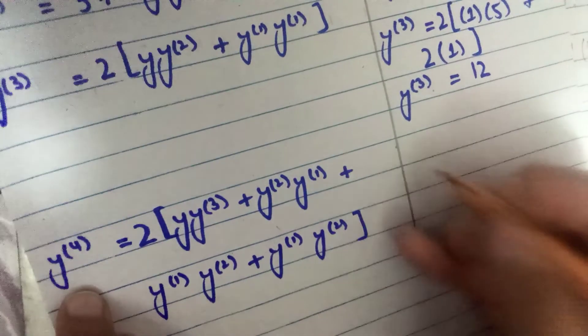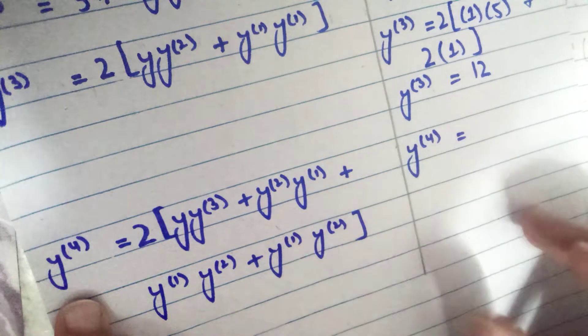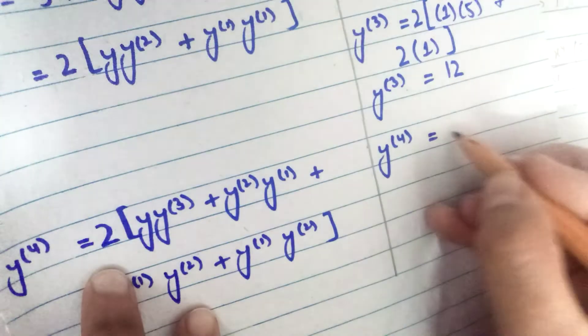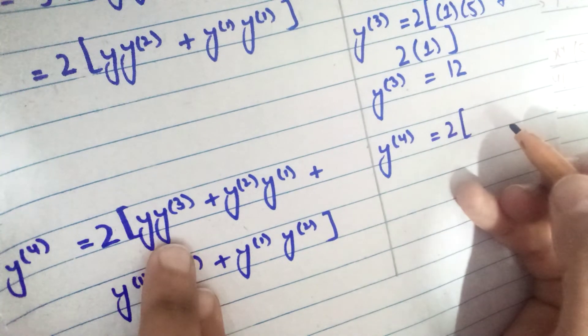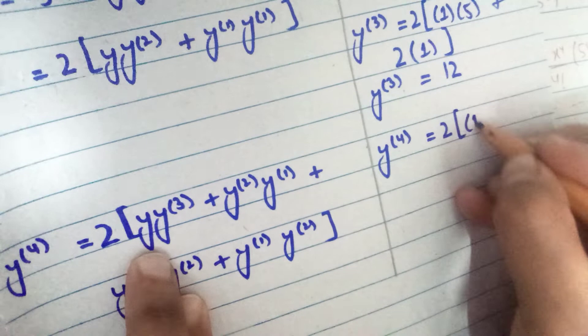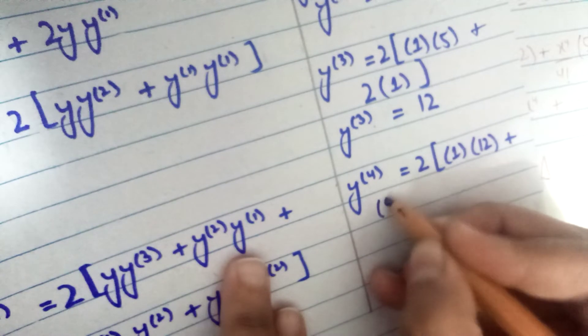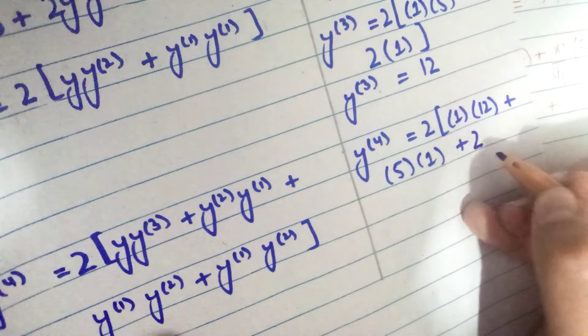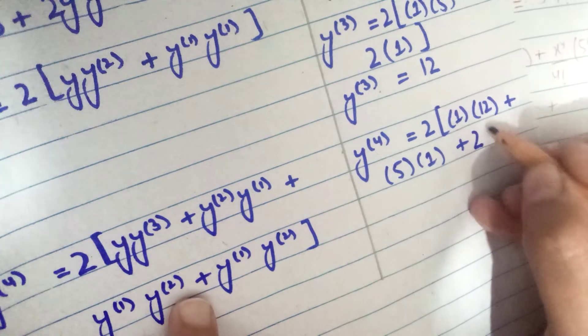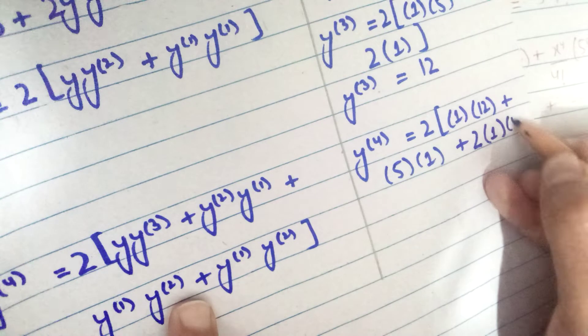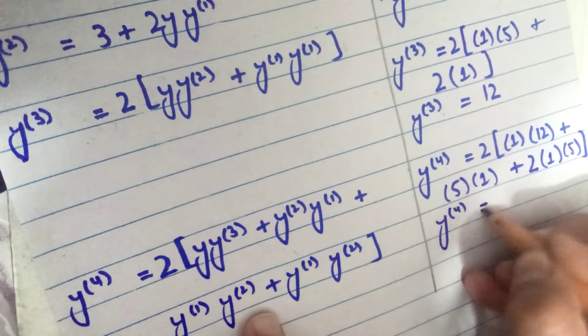To find y4, we substitute all values: 2 times y naught (1) times y3 (12), plus 2 times y2 (5) times y1 (1), plus 2 times y1 (1) times y2 (5). This gives 2×1×12 + 2×5×1 + 2×1×5 = 24 + 10 + 20 = 54. So y4 equals 54, our fourth non-zero value.